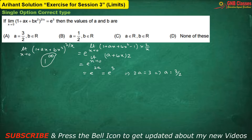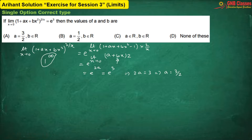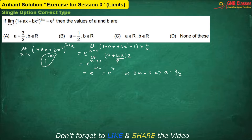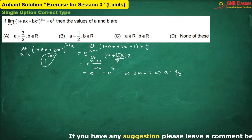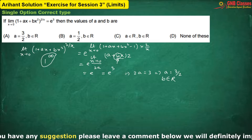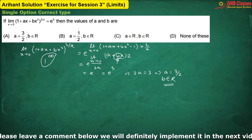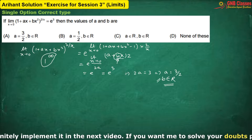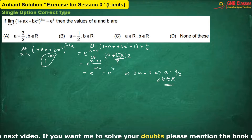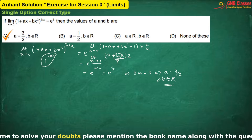Now observe carefully: for any real value of b, as x is approaching towards zero, whatever value you take for b, ultimately bx will tend towards zero, so that term will always get cancelled. That is, in the limit we will take that thing as zero. So b can take any real value. For any real value, bx will become zero. Therefore option A is correct.